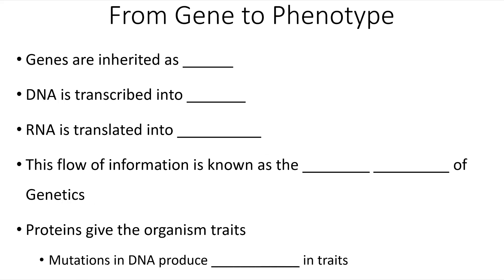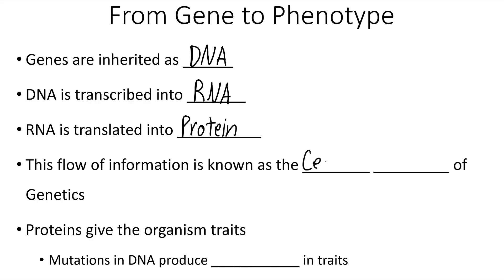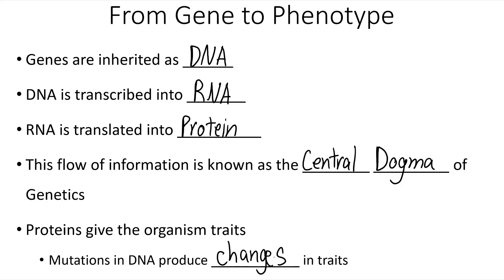To sum up what we've learned about DNA and how DNA works: genes are inherited as DNA from an organism's parents. That DNA is transcribed into RNA, and that RNA is then translated into protein. This flow of information is known as the central dogma of genetics. Proteins give the organisms traits, and mutations in DNA produce changes in those traits.